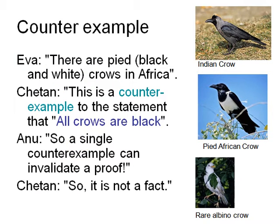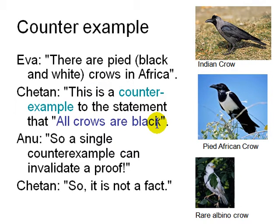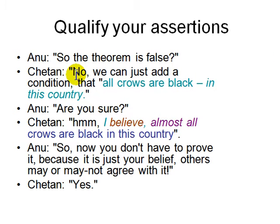Back to the crow logic — consider the counter-example. The Indian crow is black, the American Raven is black, but the pied African crow actually has a white jacket. All crows in Africa have this white coloring. This is a counter-example to 'all crows are black.' A single counter-example can invalidate a proof. There is also the albino crow, which lacks a color gene and appears white. So is the theorem false? No — we can simply add a condition: 'all crows are black in this country.'